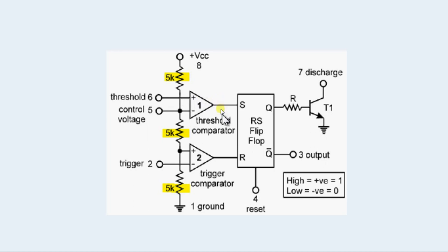If you leave pin 5 unconnected, then it assumes a value of 2/3 of the supply, but you can always change the value. Pin 2 forms the reference voltage for the trigger comparator.